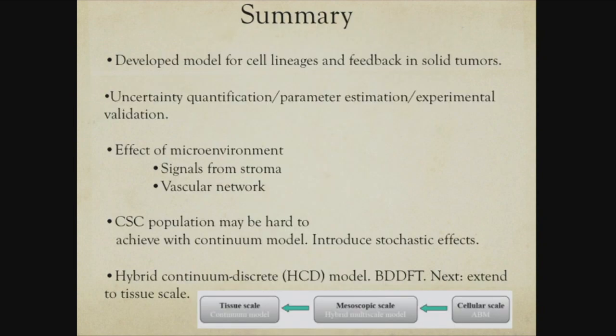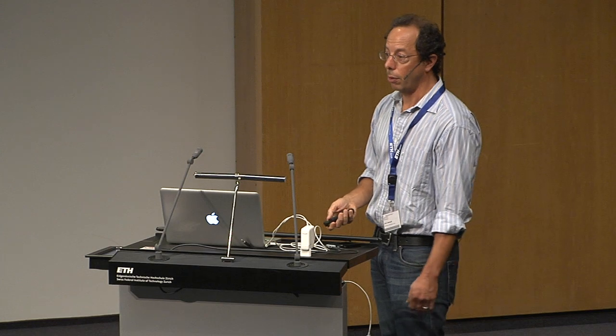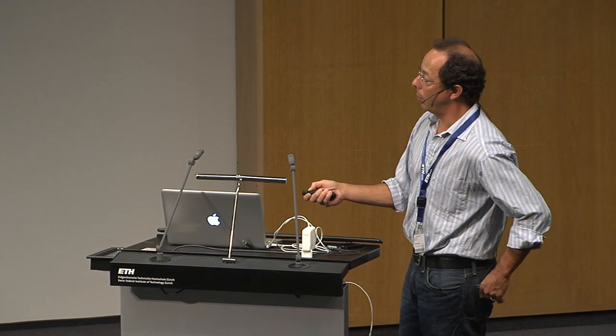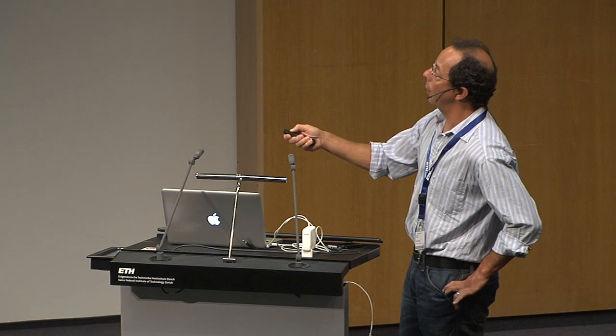To conclude: we've developed this multi-scale model of cancer, trying to connect the continuum scale with the discrete scale. The next step is to go to the tissue scale using upscaling techniques from dynamic density functional theory — amplitude and phase expansions — to get to the tissue scale. We still have a lot of work to do: quantifying uncertainty, getting better parameter estimates, and more detailed experimental validation. I've mostly shown correlation rather than matching a specific experiment because we haven't had access to enough data to do that.